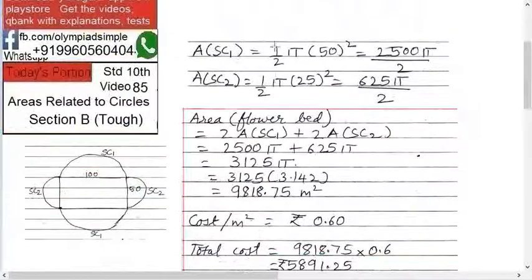What I have done is I first found out the semicircle area and then combined the two semicircles. Area of semicircle 1, SC1, is 1 upon 2 into π r squared.